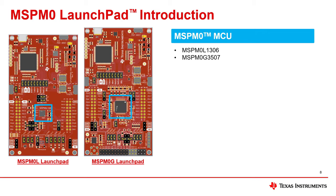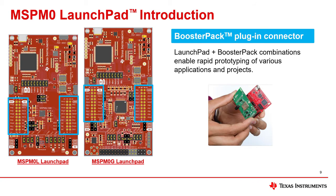The chips just below the center of the Launchpad are the MSP M0L or MSP M0G chips. The pin headers on both sides of the lower part of the Launchpad may be used for booster packs. Booster packs are specific functional modules that are designed to plug directly into the Launchpad and allow for rapid prototyping. You may also use individual jumper wires on these pin headers.